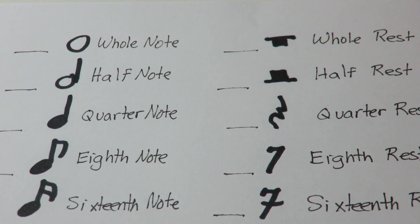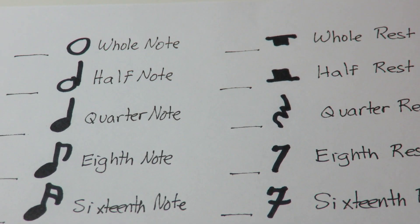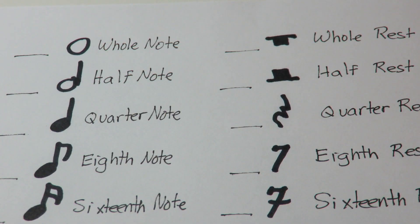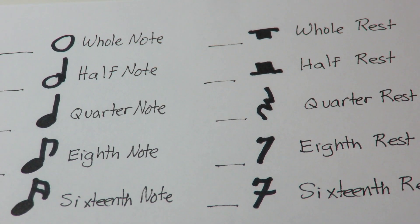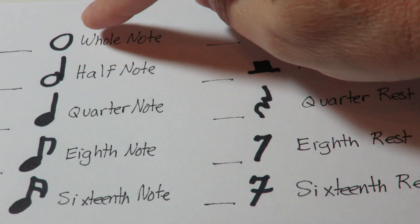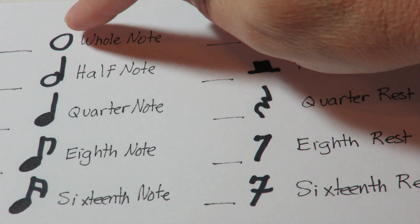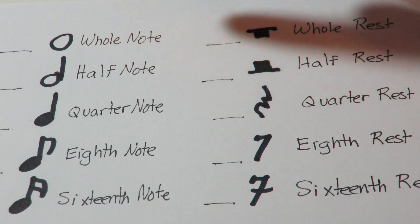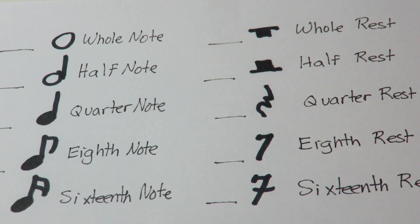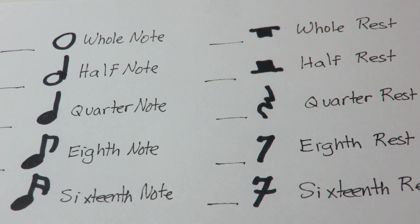Hi everybody, this video is to learn the number of beats that each of the notes and rests get. You should have page 23 in your workbook available. If you have it open and have already done so in class, you will have the names of each of the notes and rests already written in to the right of each of the symbols.